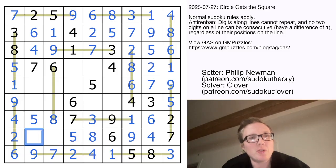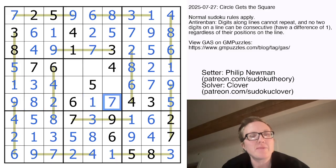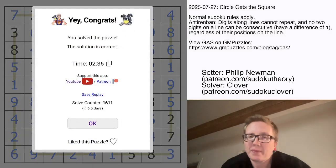And these are going to be 1 and 3. These guys are going to be 2 and 4. These are going to be 3 and 8. These are going to be 1 and 7 to finish off that row by Sudoku. And I need a 3 and a 9 here. And an 8 and a 2. And that is how you solve Philip Newman's lovely Circle Gets the Square.